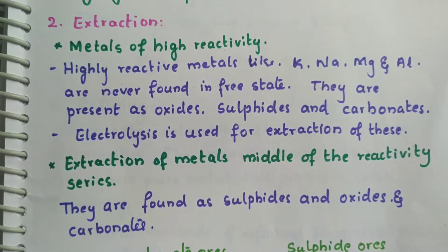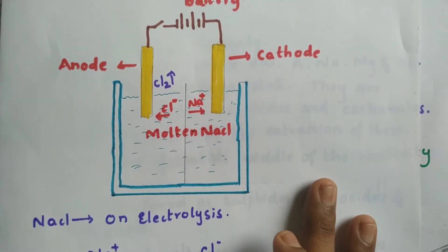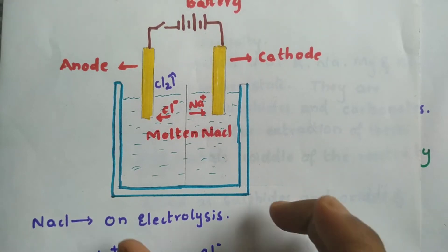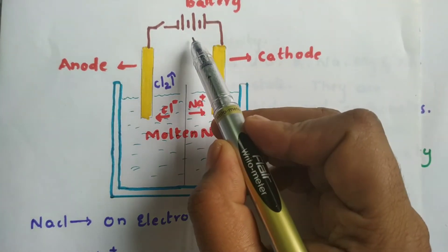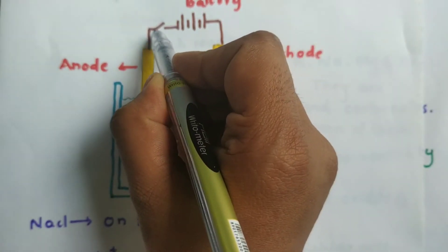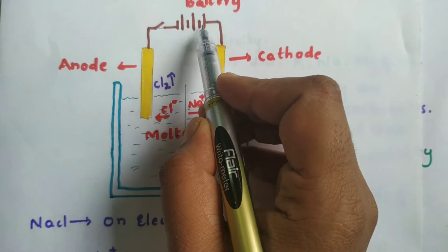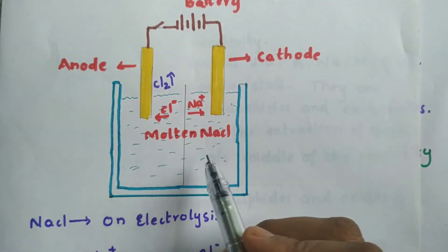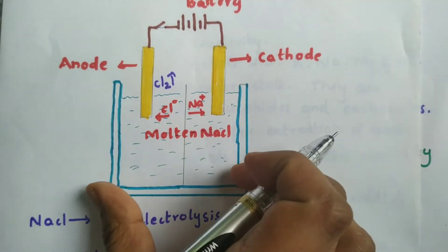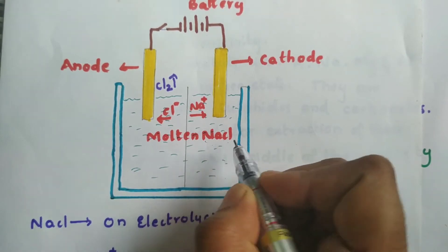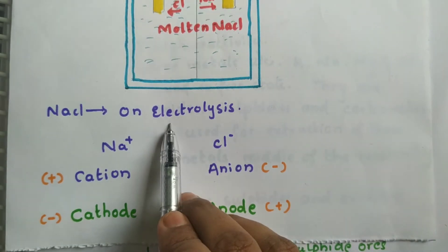Let us see how electrolysis is used in the extraction of sodium. I have drawn a simple diagram which contains a container filled with molten sodium chloride. We pass electricity using a battery. When we close the key, electricity starts to flow and electrolytic decomposition occurs, splitting sodium chloride into Na⁺ and Cl⁻.